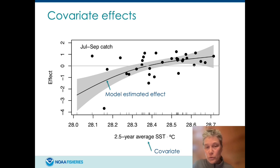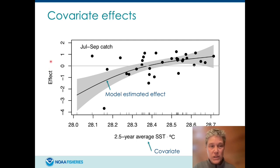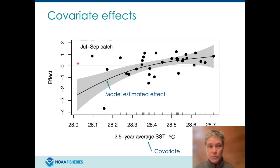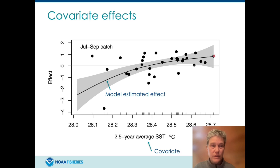I'm now going to show you a series of plots. On the y-axis is the effect of the covariate, and on the x-axis is the covariate value. If it's below the line, the covariate had a negative impact on catches; if it was above, it had a positive impact.